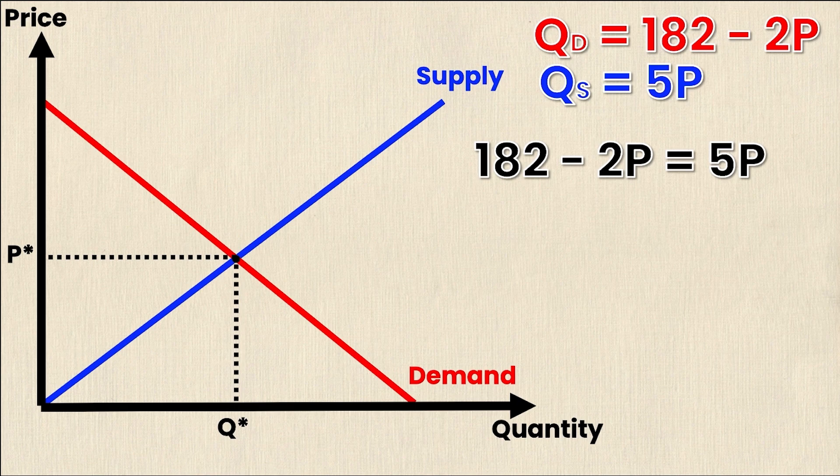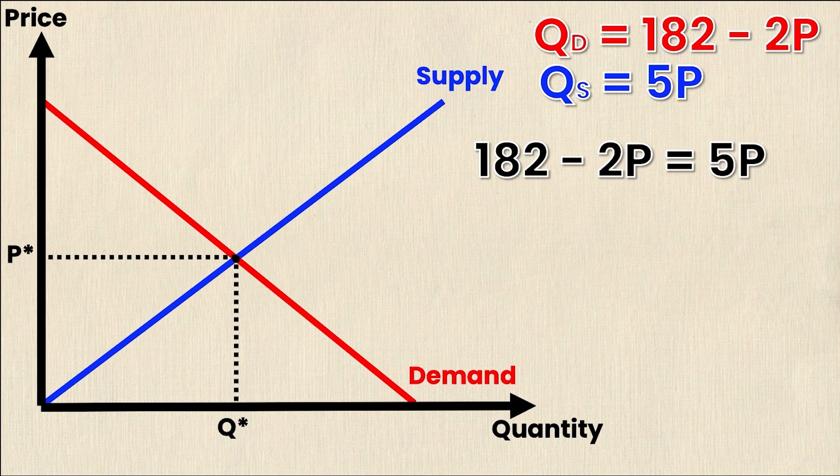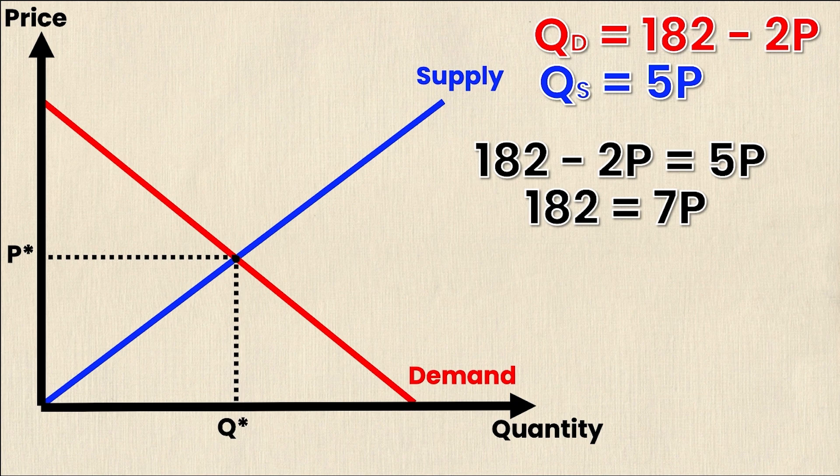Now you'll notice I have one equation one unknown so I can simply rearrange to solve for P and if I move that negative 2P to the other side I'm going to get 182 equals 7P. So again that negative 2P just went to the other side as a positive 2P and got added to 5 to get 7. Finally I divide both sides by 7 and that's going to give me p-star or my equilibrium P value is 26.